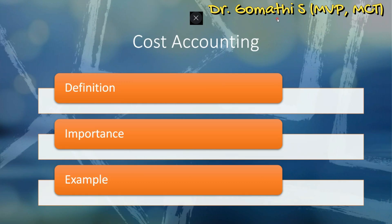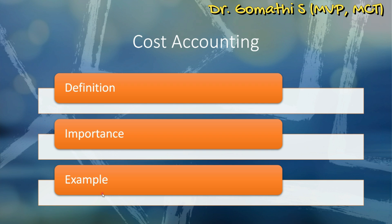Cost accounting involves tracking and analyzing production costs. It includes cost allocation methods, inventory valuation, and cost tracking. For example, Business Central allows setting up cost accounting parameters to accurately allocate production costs and determine product profitability.